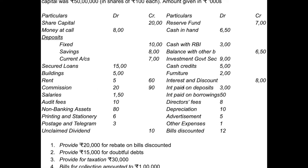Rent and operating expenses — a debit balance is an expense. A credit balance is other income; other income is Schedule 14. Interest and discount is other income, also Schedule 14. Credit balance is income. Interest paid on deposits is interest expended, Schedule 15. Interest paid on borrowings is also Schedule 15.